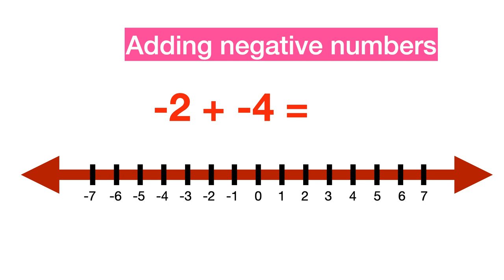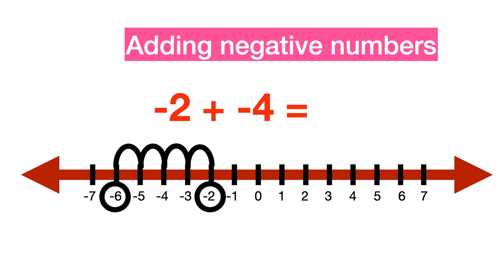Adding negative numbers. Adding two negative numbers results in a negative number. The direction of adding negative numbers is therefore to the left. To add minus 2 plus minus 4, first locate minus 2 on the number line and move 4 steps to the left. The result is minus 6, which is the correct answer.